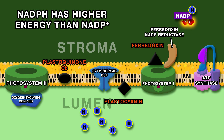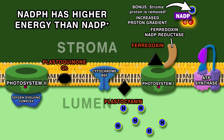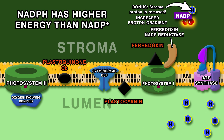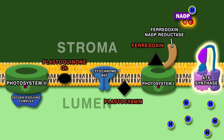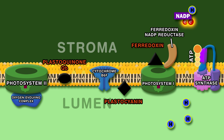Since NADPH has higher energy, this is key. A stroma proton is removed in the process, increasing the proton gradient — which in light-dependent reactions is the key ingredient.